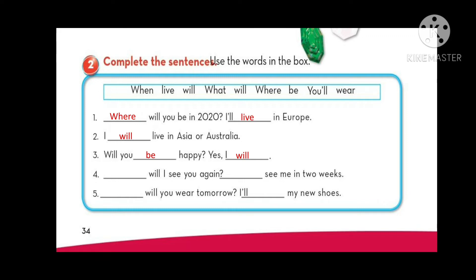Number four. Will I see you again? Okay, we need a WH word. Let's look at the answer. In two weeks. So we are asking about a time. Which question word do we use to ask about time? When. That's right. When will I see you? The answer will be you will see me in two weeks. Excellent, very good.